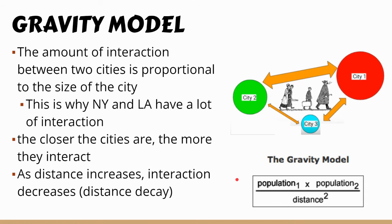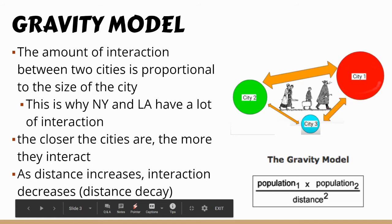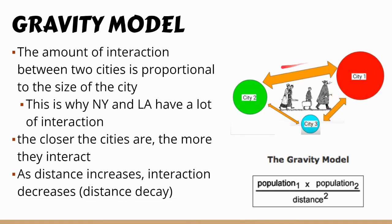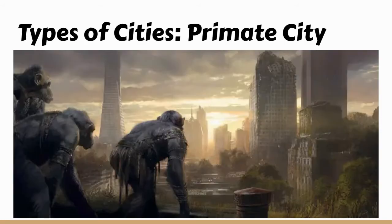Those are the two factors with the gravity model: the closer cities are, the more they interact; the larger cities are, the more they interact. You can actually calculate how much interaction a city will have with another by taking the population of city one times the population of city two, then dividing by the distance between the two cities squared. Distance decay becomes important as well — if cities are not very large or are further away, there's less interaction, like between Geneva and DeKalb.